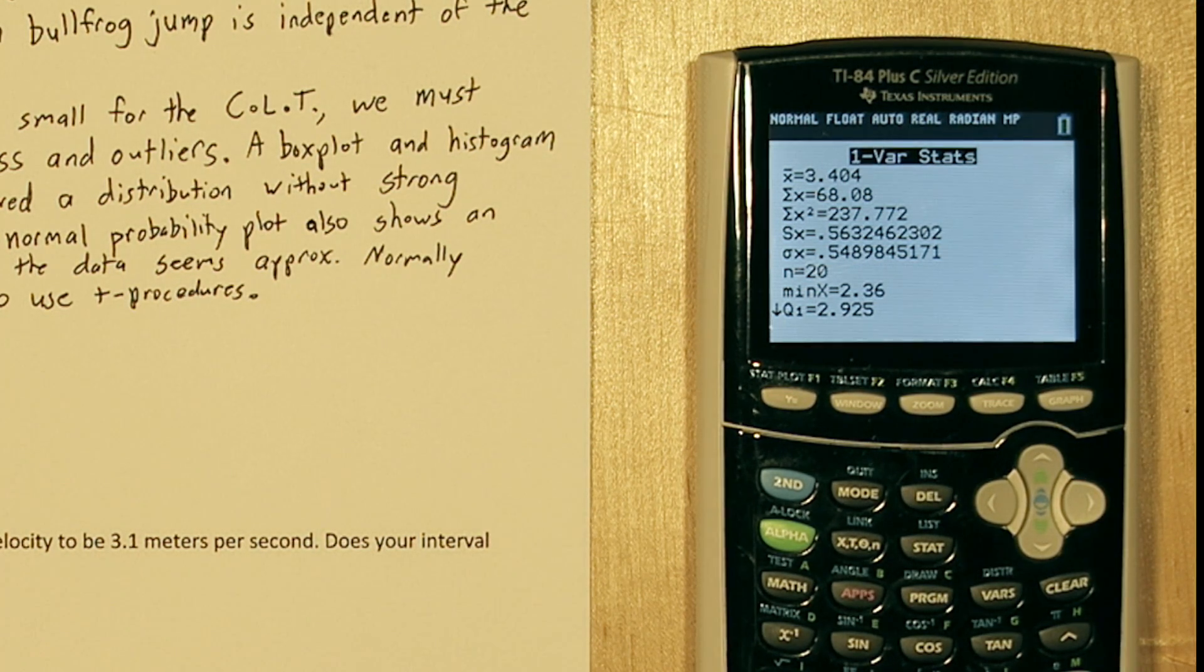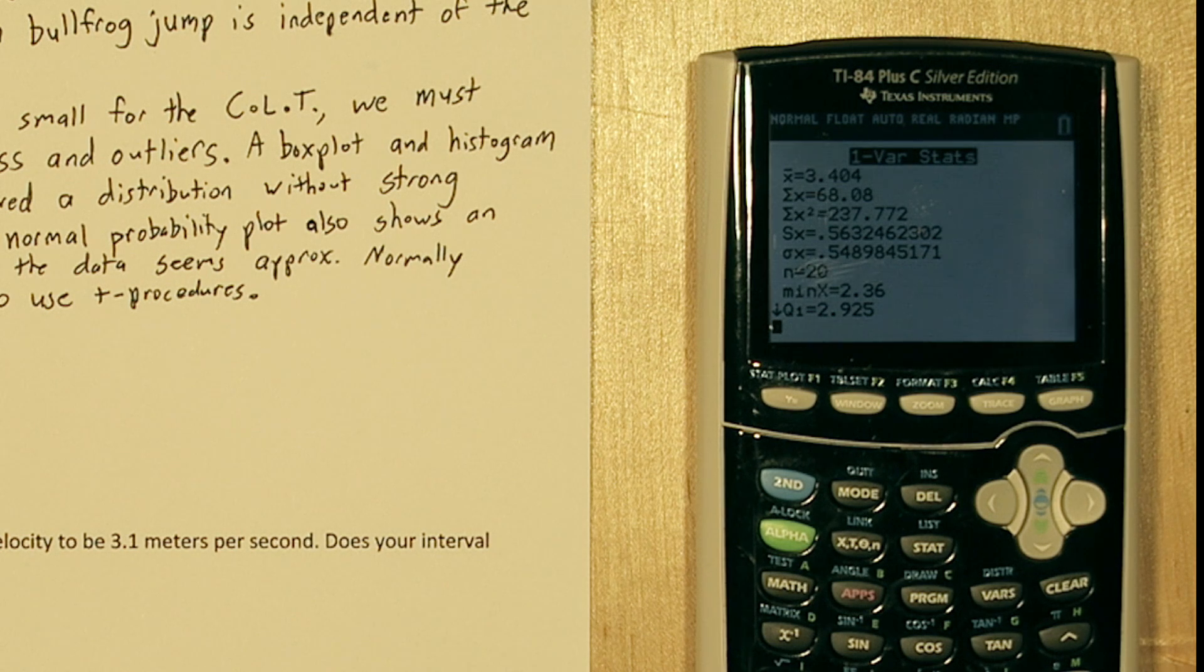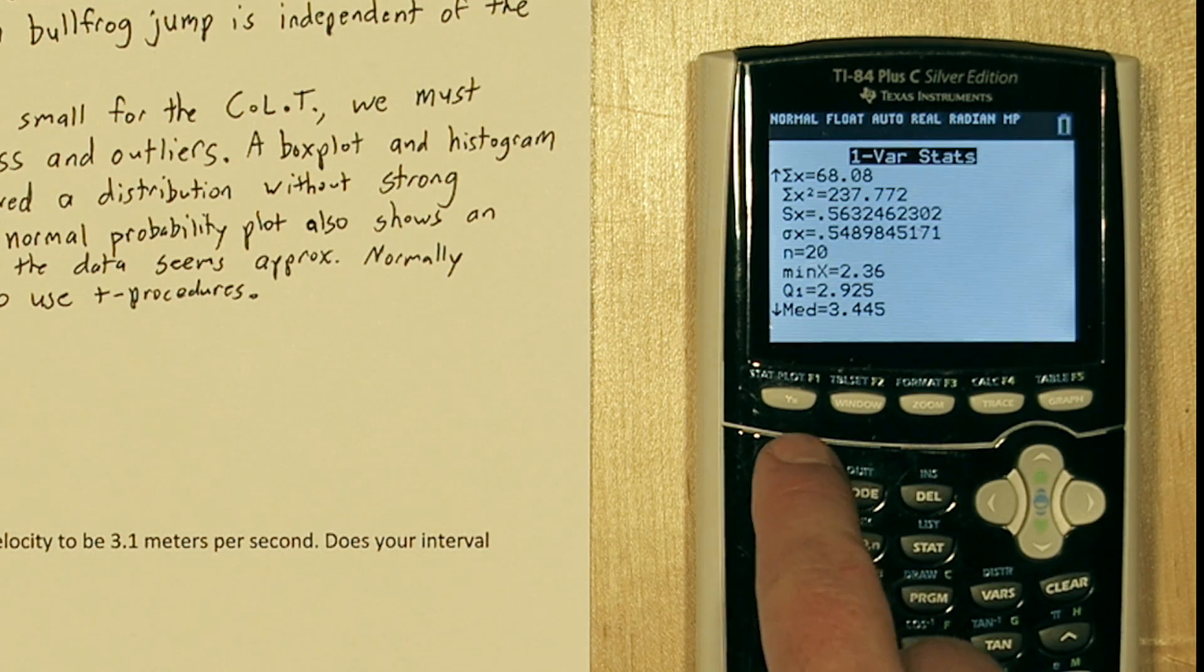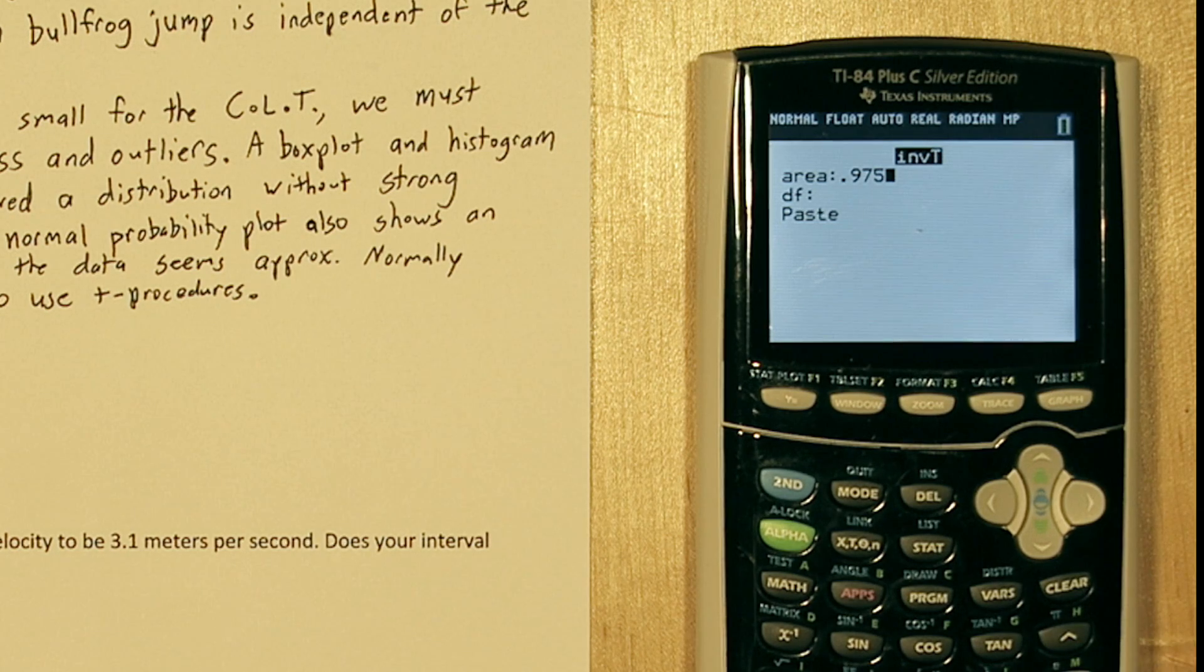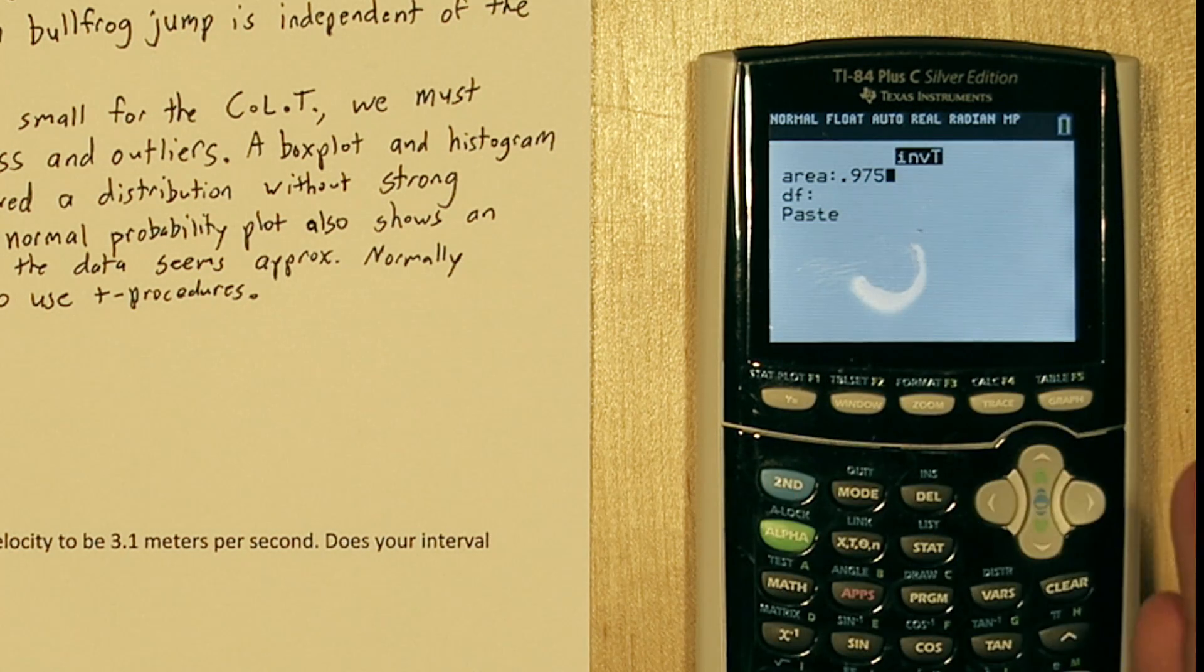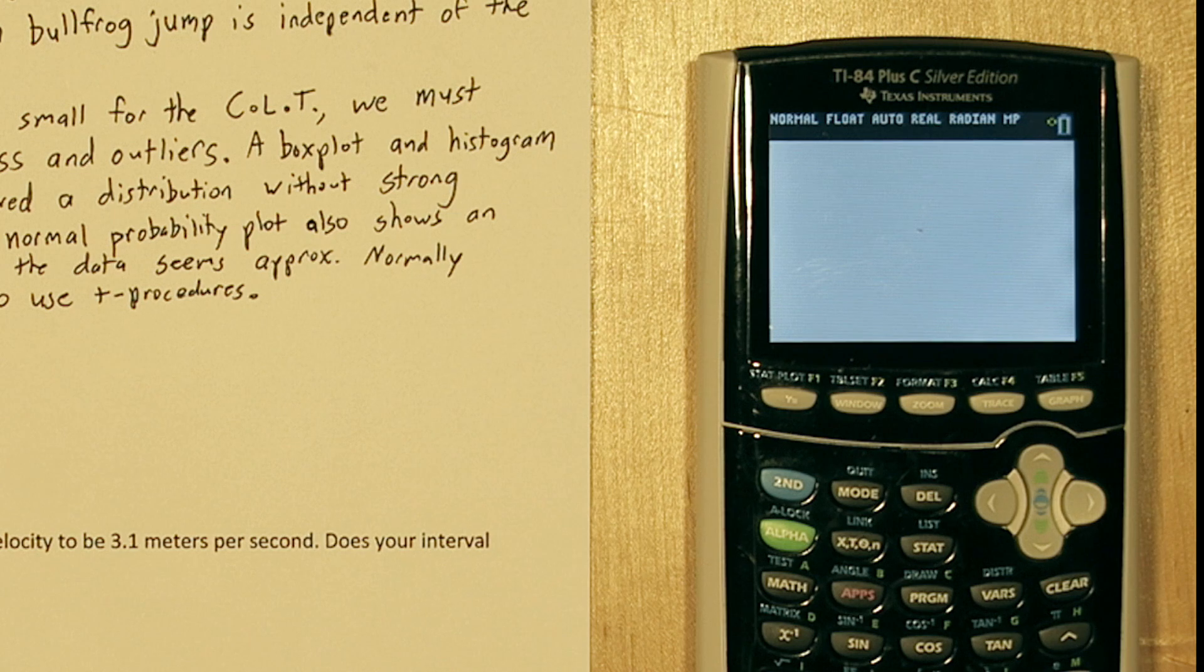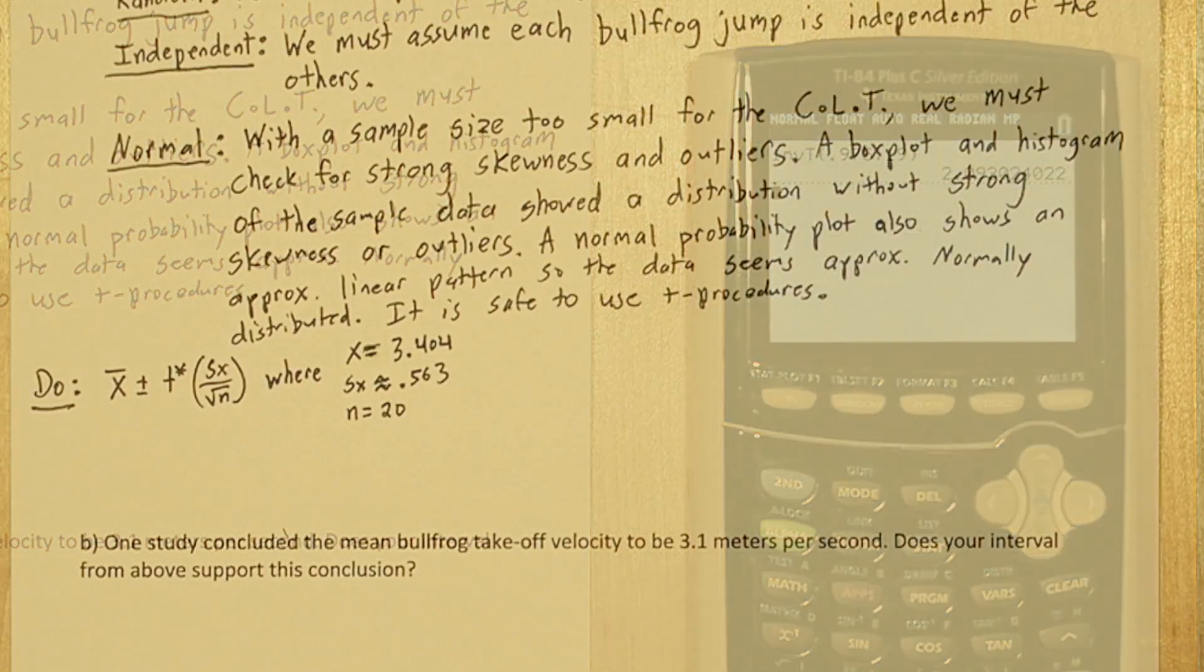Now to find t star, we need the critical value that cuts off the middle 95% of a t distribution with 19 degrees freedom. That's n minus 1 degrees freedom. Press second, vars, and go down to inverse t. For area, we're not going to put 95%, we're going to put 0.975. That's because this value includes everything to the left of our upper cutoff value, so the middle 95%, but also the lower tail of 2.5%. For degrees freedom, let's put 19, and it will calculate our t star for us. Our critical value is approximately 2.093 in this case.